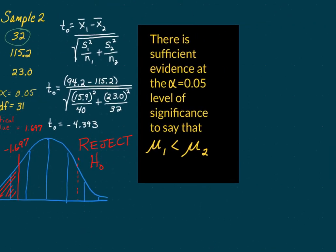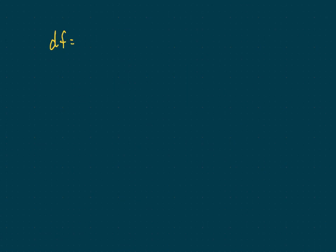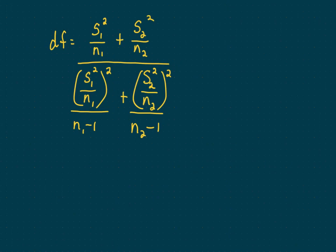Some of you may be wondering why we can say degrees of freedom equals one less than the smallest sample size. That is a rough approximation. However, I can give you the correct formula that provides a more exact result — here it is. If you prefer precision, you can memorize and use that formula. Otherwise, just subtract one from the number in the smaller sample for your degrees of freedom. I'll do one more video — I've been promising a confidence interval hypothesis test, so look for that video.